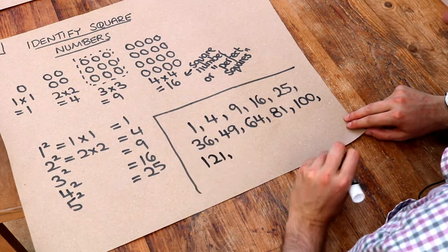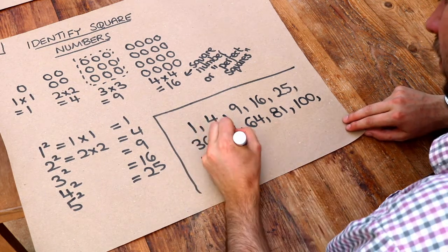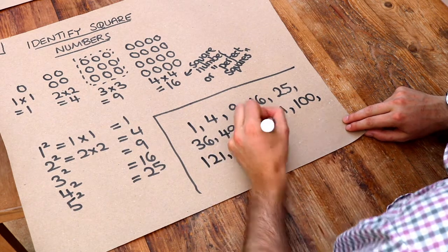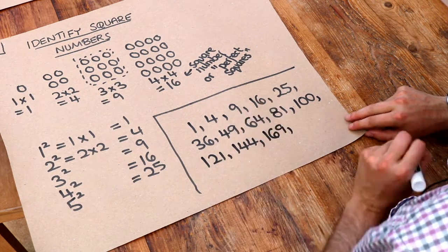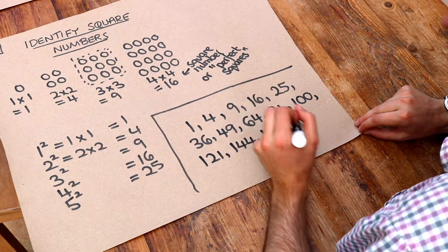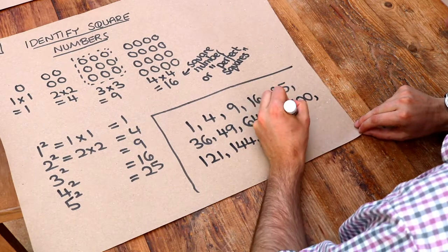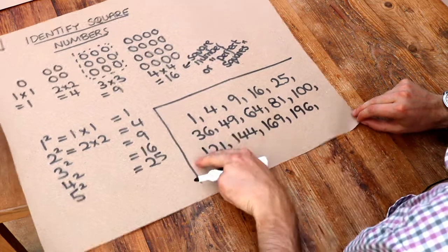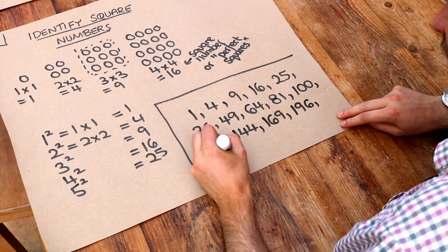Eleven times eleven is one-two-one. Twelve times twelve is one-four-four. Thirteen times thirteen is one-six-nine. Fourteen times fourteen is one-nine-six. And fifteen times fifteen is equal to two-hundred-and-twenty-five.